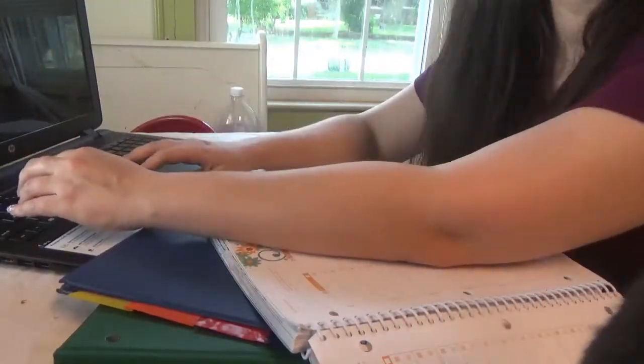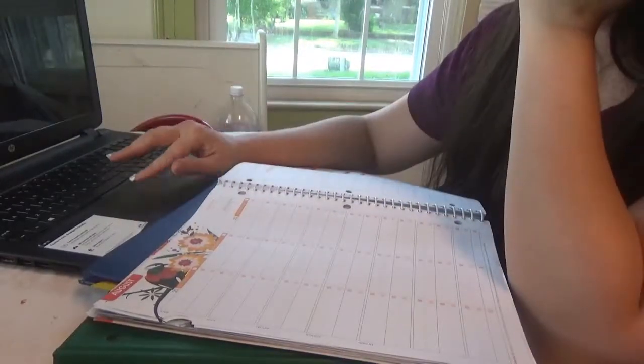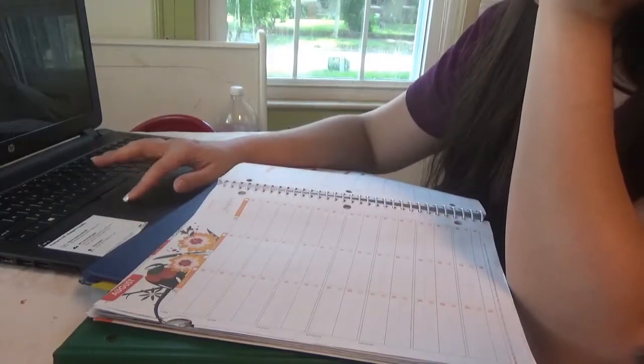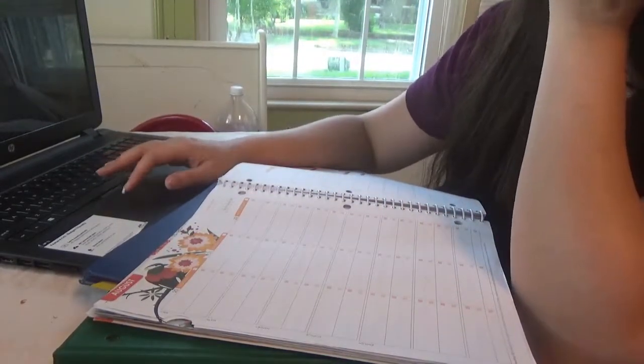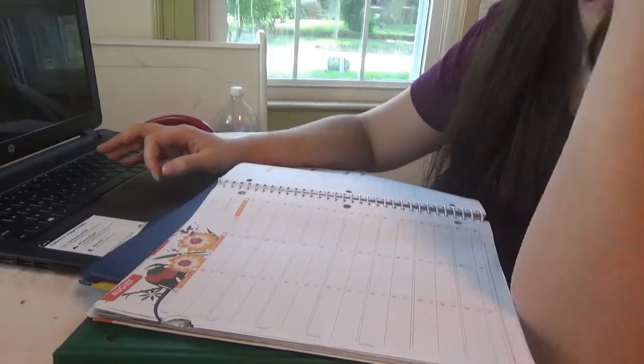Until anything else comes up that I need to add to it. So now the big book is a school book. It is the Well Planned Day homeschool planner. So in it I have to go through and write out the work that we're going to do.